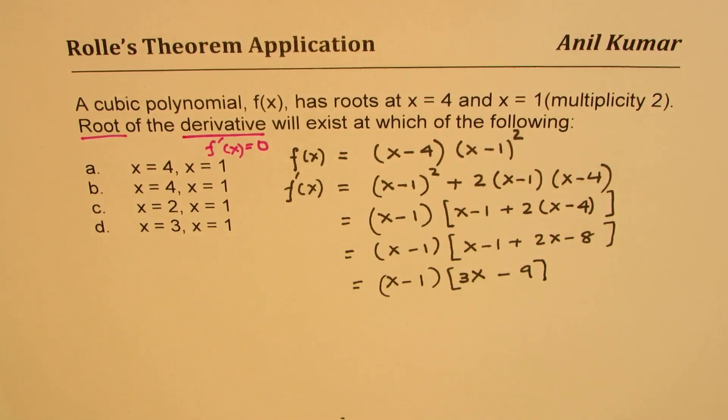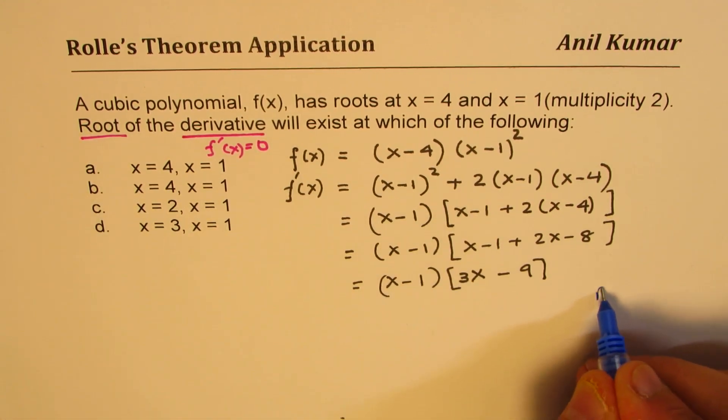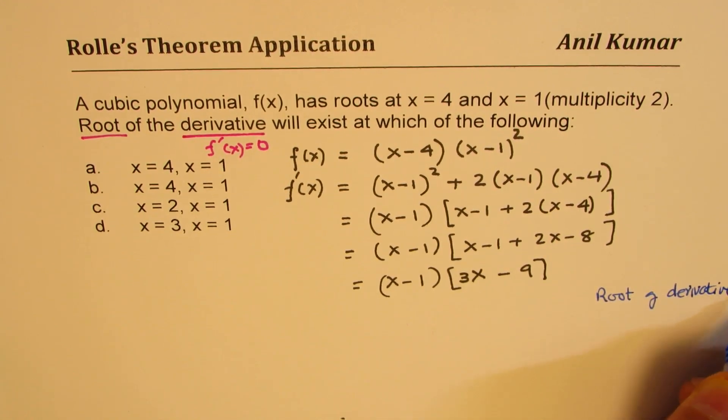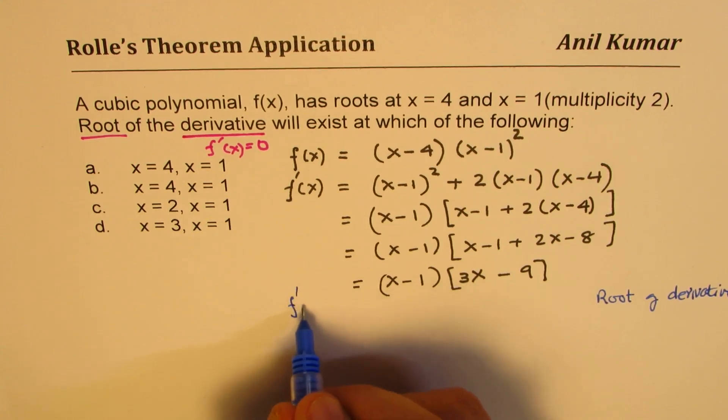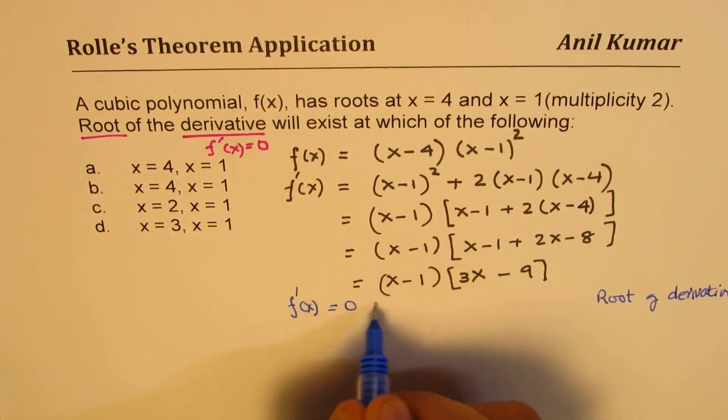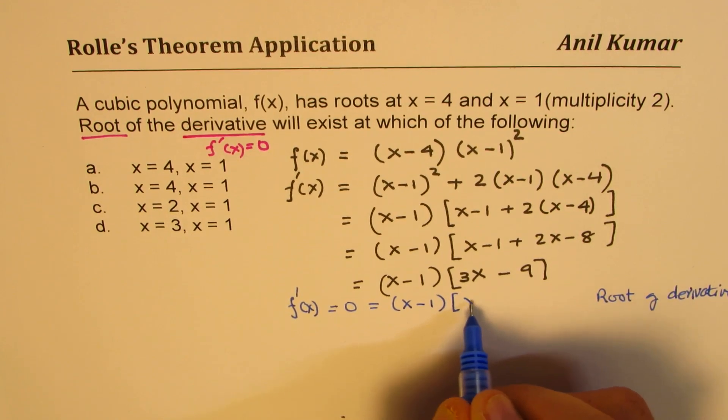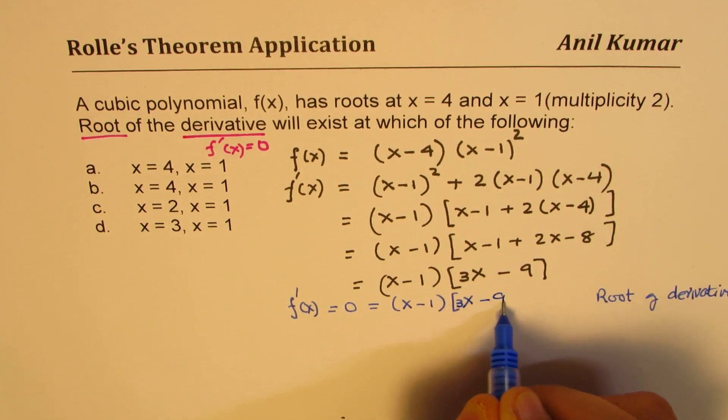So we really want to figure out the root. So root of the derivative is what? So when we say root of derivative, it really means that f'(x) equals to 0. That means (x-1) and (3x-9).